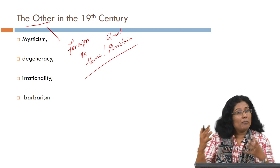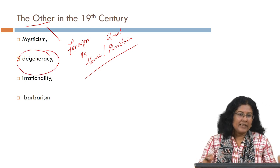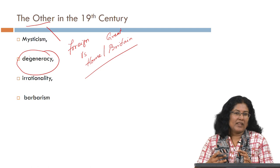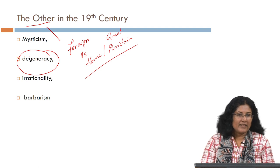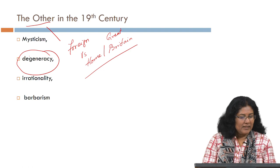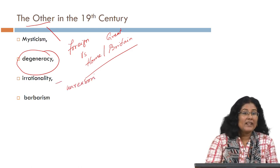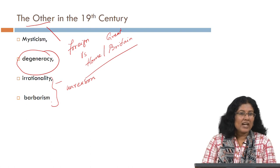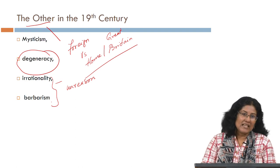The other is also problematically associated with degeneracy — something that is not morally acceptable or morally right. Degeneracy is associated with something that is backward in terms of morality, lifestyle, and other associated things. The figure of the other is also linked to irrationality, unreason, someone who is not enlightened, someone who is barbaric. These are characteristics used to describe the figure of the other in 19th century fiction.